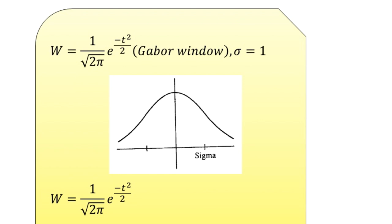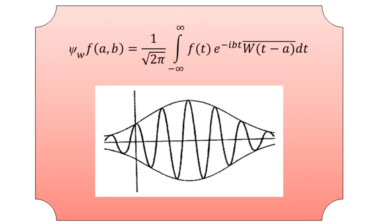Along with the signal generally represented by f, we also have the role of the window function W. The Windowed Fourier Transform is expressed mathematically as: ψ_W(f)(a, b) = (1/√(2π)) × ∫₋∞^∞ f(t) × e^(−ibt) × W(t − a) dt, where W(t − a) captures the shifted window variation and dt completes the integral representation.